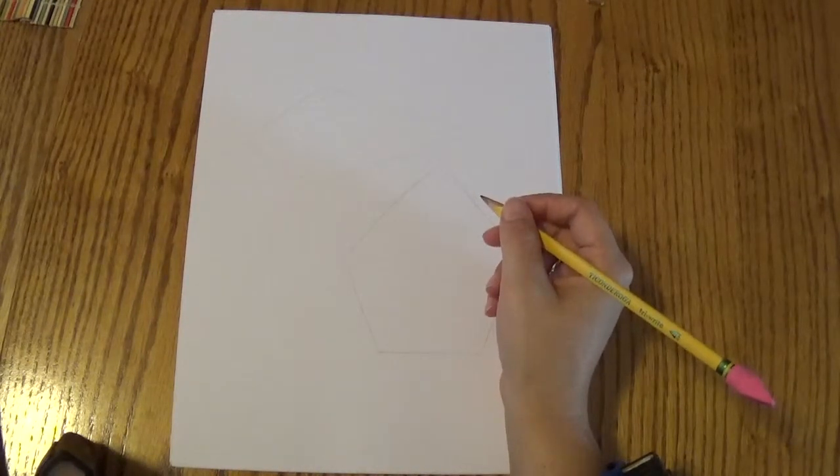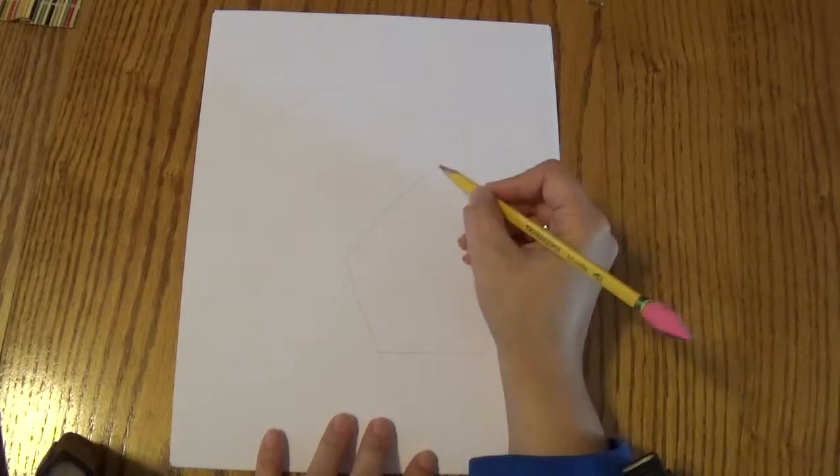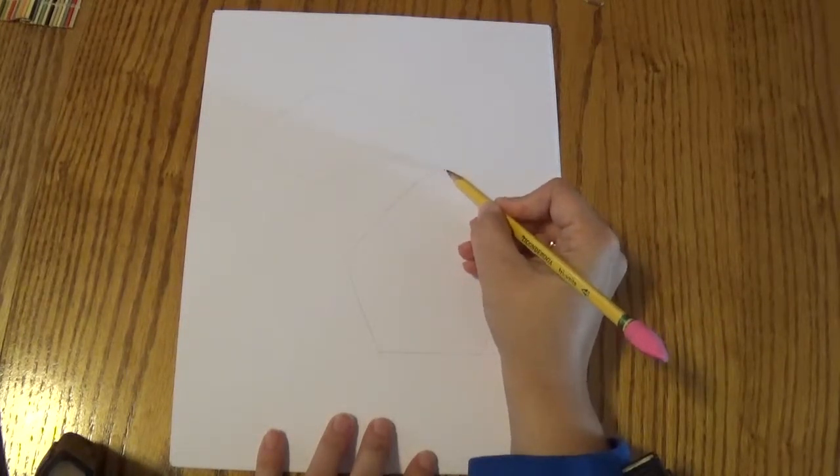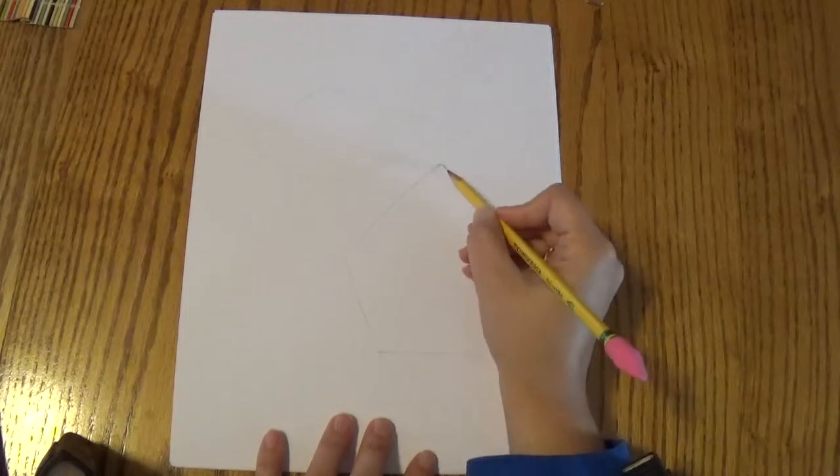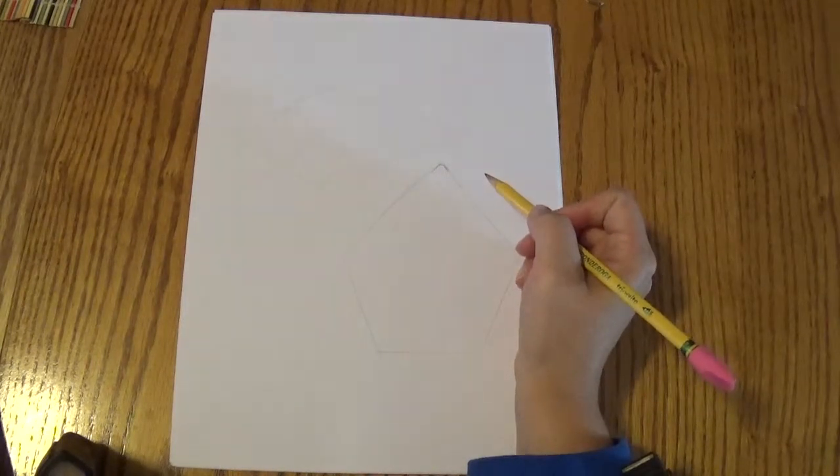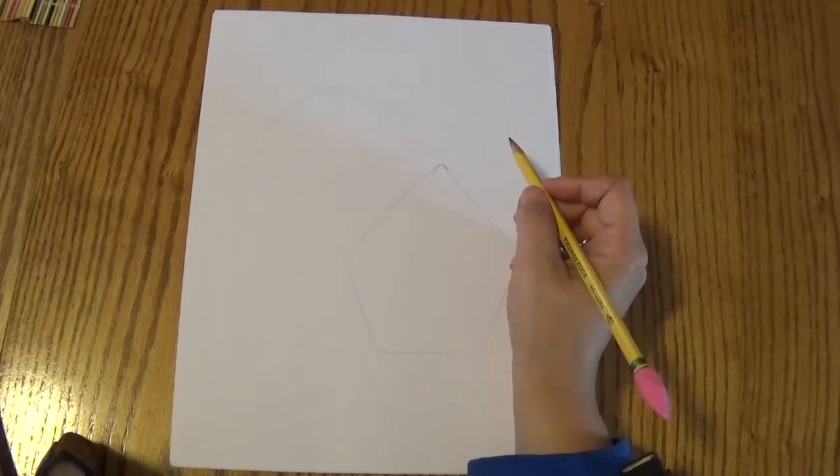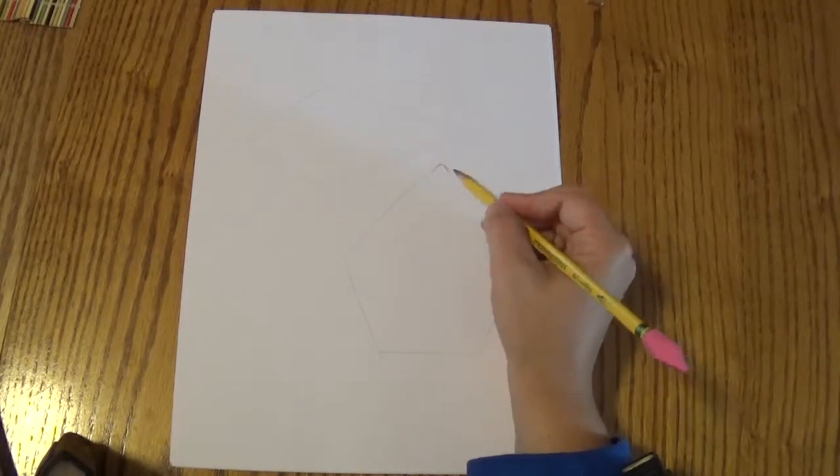So the first thing we're going to do is start to make these little curves in here. So we need to make the top of it is going to be a little point just like that, kind of meeting the inside of that pentagon. And then we're going to make the little curves that go down the side. And I want you to pay attention to how I am following along the lines.